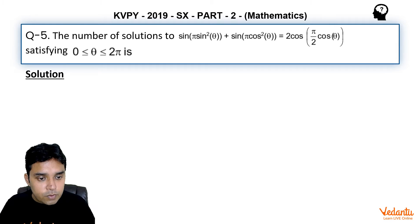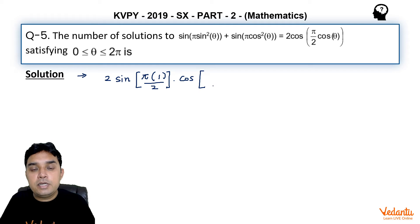Now to solve this question I will use the identity sin C + sin D on the left hand side. This will give me 2 sin((C+D)/2), and you can observe if I add them I can take π common and it will be sin²θ + cos²θ, which I can write as 1 upon 2, into cos((C-D)/2).